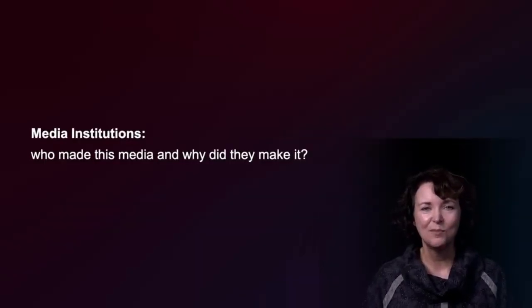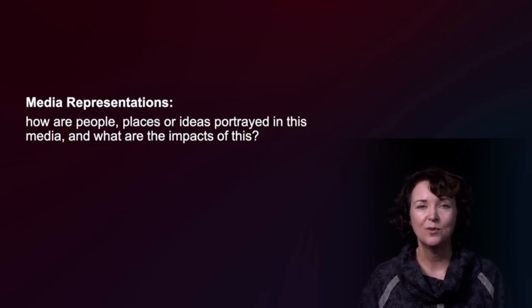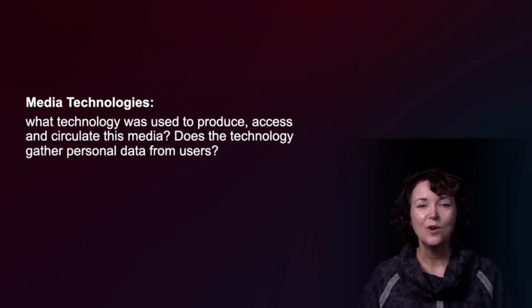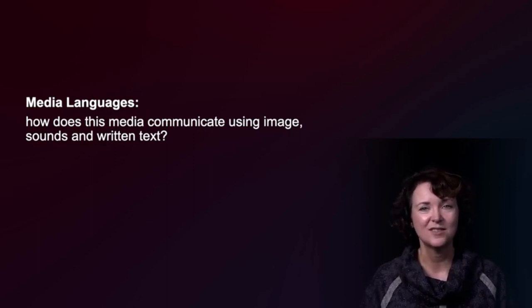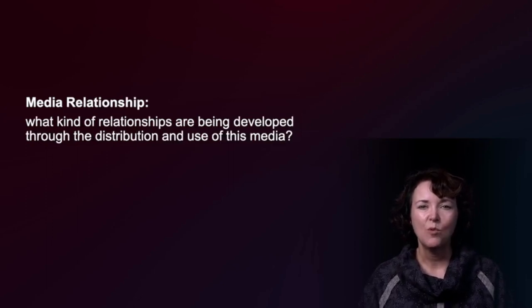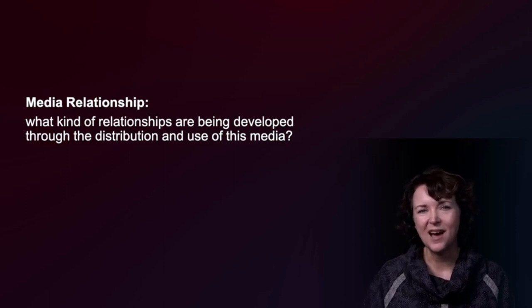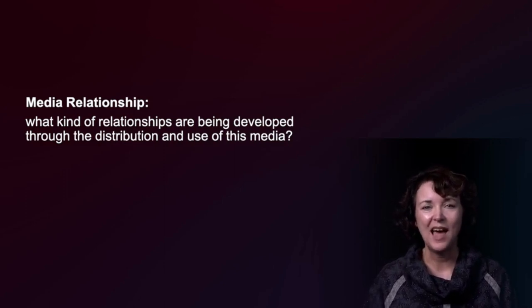Behind each key concept are some pivotal critical thinking questions: Who made this media and why did they make it? Who was this media made for and how are they likely to respond to it? How are people, places, or ideas portrayed in this media and what are the impacts of this portrayal? What technologies were used to produce, access, and circulate this media — and does the technology gather personal data from users? How does this media communicate using image, sounds, and written text? And what kind of relationships are being developed through the distribution and use of this media? These questions may not always be asked directly to learners — they might instead be embedded into activities or learning resources, and how this happens needs to be age and context appropriate.